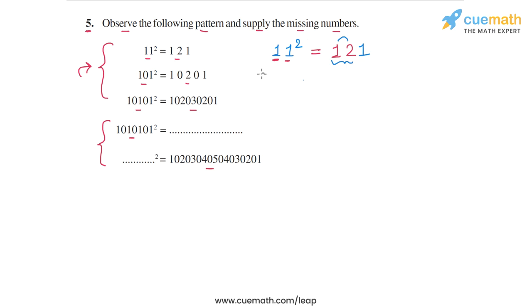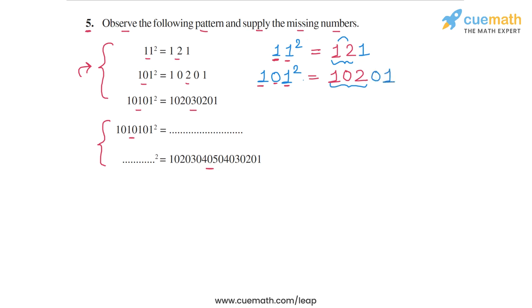Now let's apply the same thinking to 101². The first digit is 1, so we write 1; the next digit is 0, so we write 0; and then the second 1 is the second distinct digit, so we write 2. Because there are no more digits in 101, we complete the string symmetrically — giving us 10201.